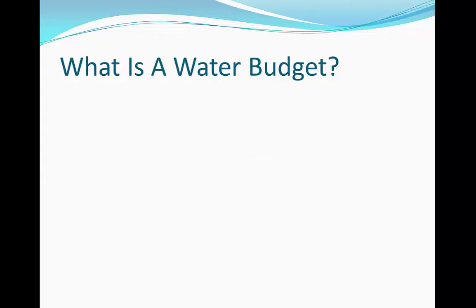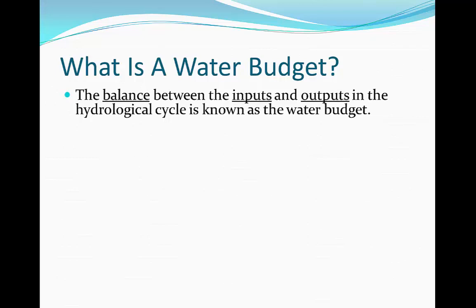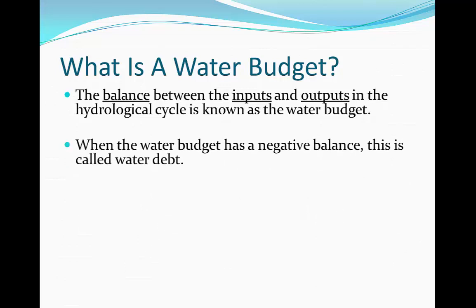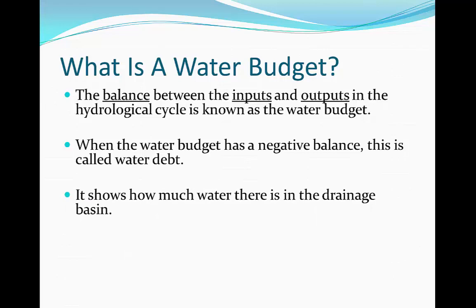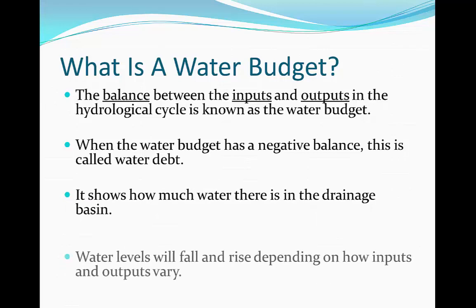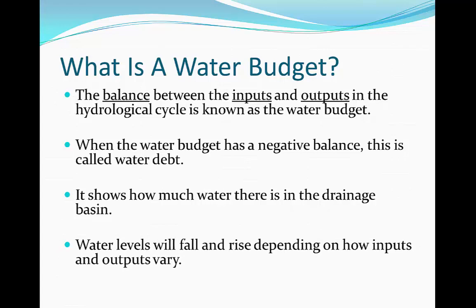What is a water budget? A water budget is the term that we use to describe the balance between the inputs and outputs in the hydrological cycle. This relates to water deficit, which is when the water budget has a negative balance — that is to say when the outputs are exceeding the inputs. It pretty much shows how much water there's going to be in the drainage basin as a whole, and the water levels will vary depending on the amount of inputs and outputs in the drainage basin system.